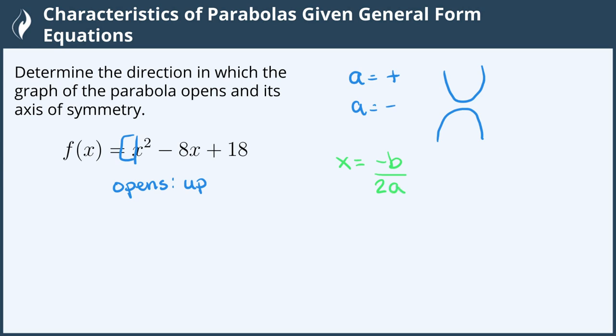This gives us the x-coordinate for the vertex, which we already know is the same as the axis of symmetry. So we will find b and a.